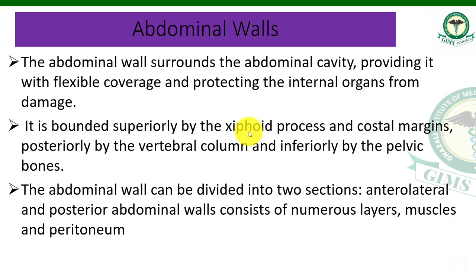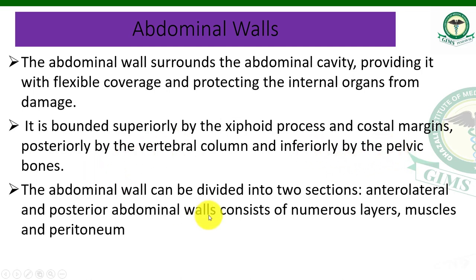Superiorly, the abdominal wall is bounded by the bony cartilage of the sternum called the xiphoid process, and the costal margin — the margin of the ribs. Posteriorly, the abdominal cavity is bounded by the vertebral column on the back side. Inferiorly, it is bounded by the pelvic bones.